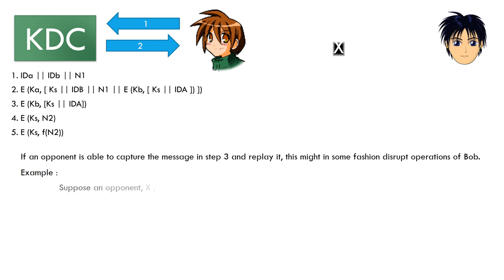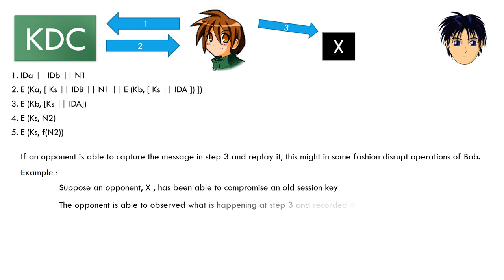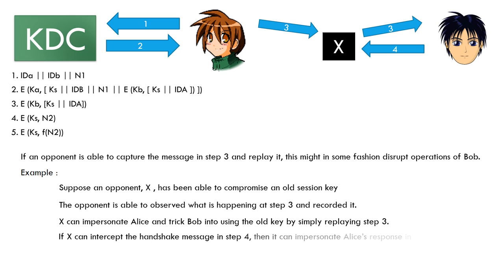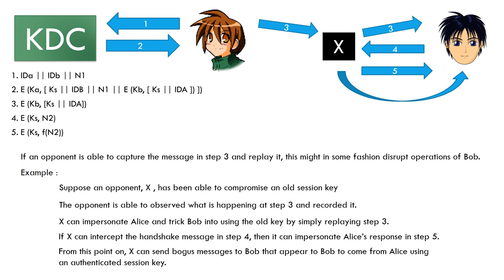The opponent is able to observe what is happening at step 3 and record it. X can impersonate Alice and trick Bob into using the old key by simply replaying step 3. If X can intercept the handshake message in step 4, then it can impersonate Alice's response in step 5. From this point on, X can send bogus messages to Bob that appear to come from Alice using an authenticated session key.